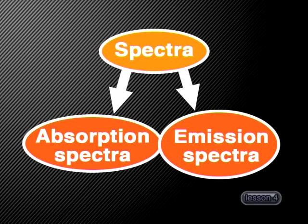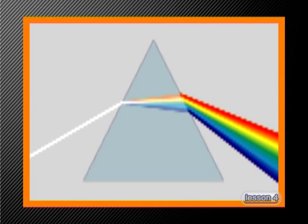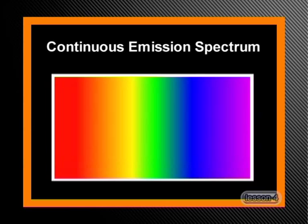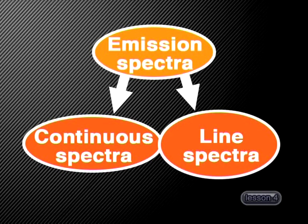Another way in which light interacts with matter provides scientists with some very useful analytical tools called spectra. In this lesson, we are going to examine two types of spectra: absorption spectra and emission spectra. Let's first look at emission spectra. When white light is passed through a prism or diffraction grating, the light splits up into the spectrum of different colours, from red to violet. The spectrum appears as a continuous band of colours with no sharp boundaries between them. This kind of spectrum is called a continuous emission spectrum.